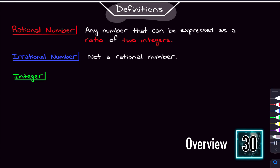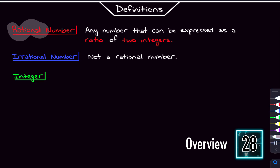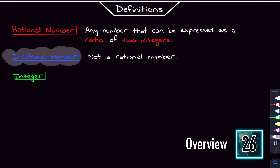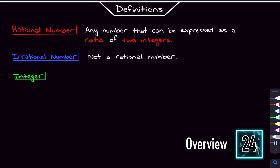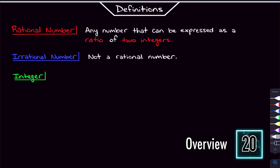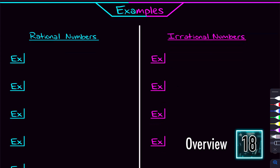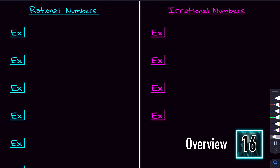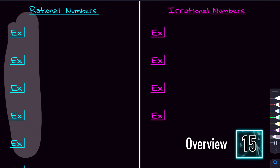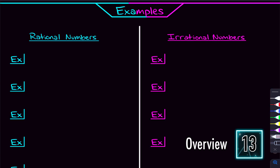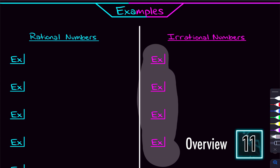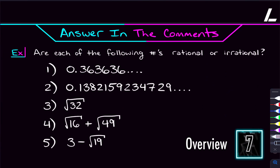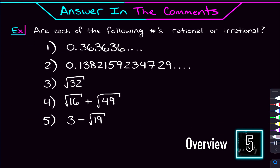We're going to start off with some quick definitions. I'll define what a rational number is and what an irrational number is. For those definitions, we're going to need to know what an integer is, so I'm going to define that as well. After we're done with our definitions, I'm going to give you some examples of rational numbers, and then plenty of examples of what irrational numbers are. After we go through all that, I'll give you some problems to try and answer in the comments.